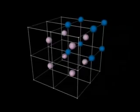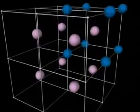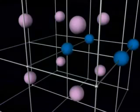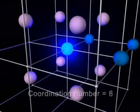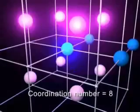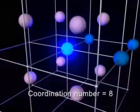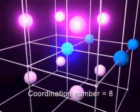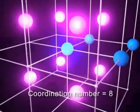In this tiny portion of a body-centered cubic array, you can see that any given particle has four nearest neighbors above and four below, for a total of eight nearest neighbors.